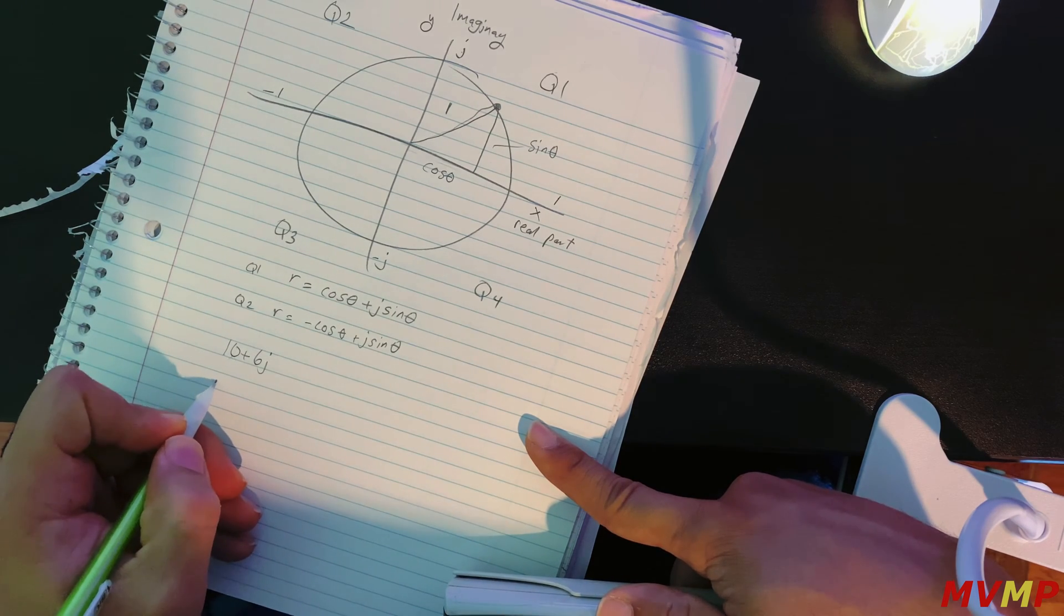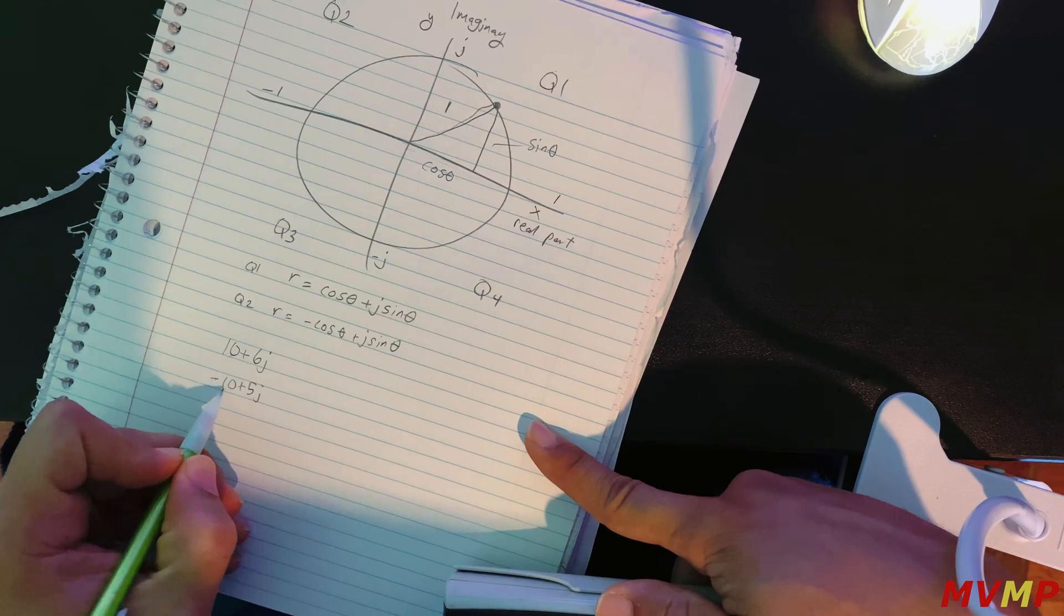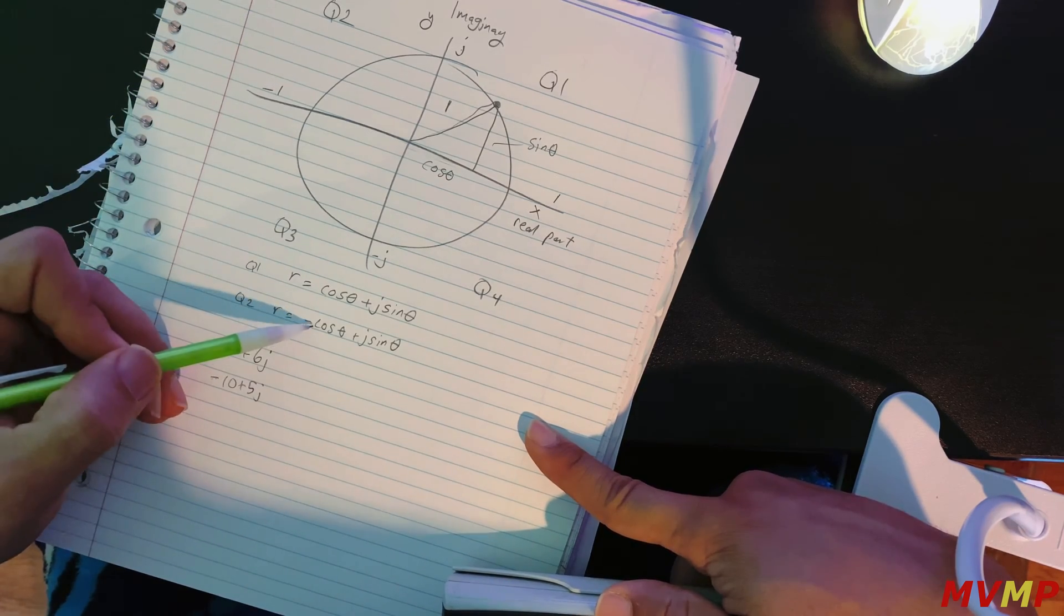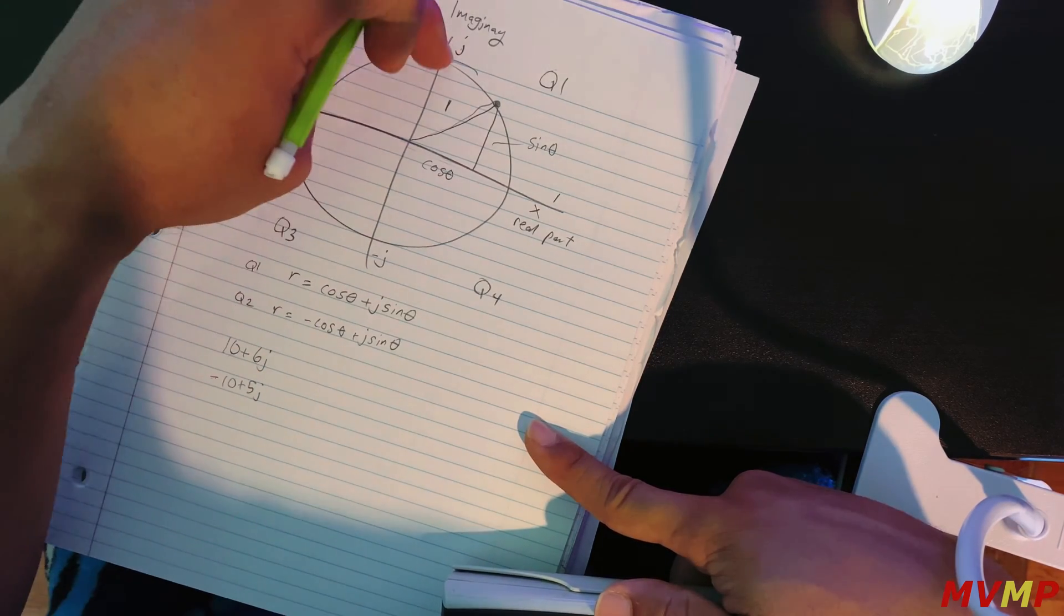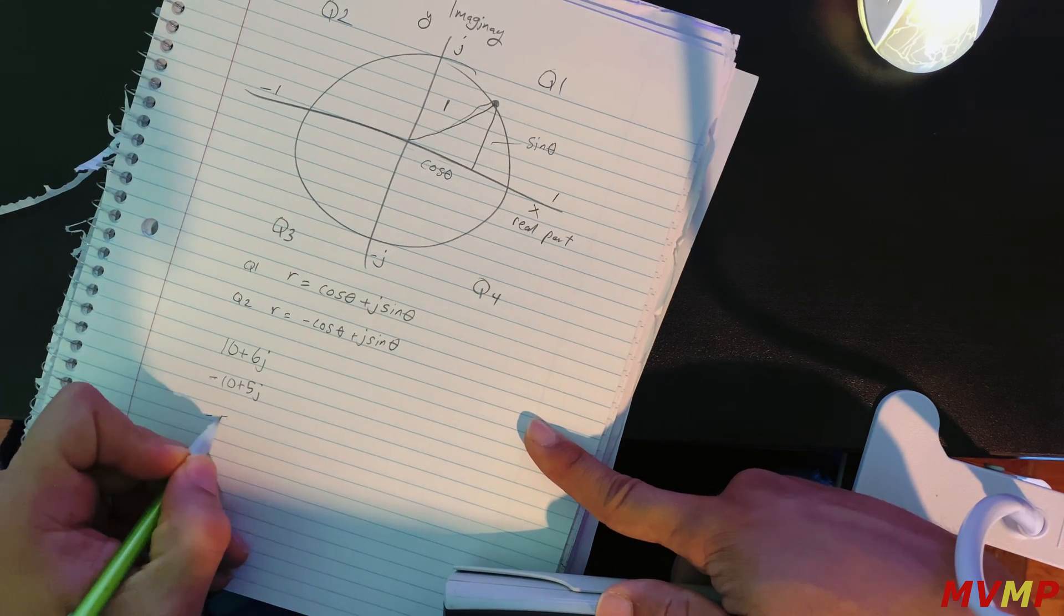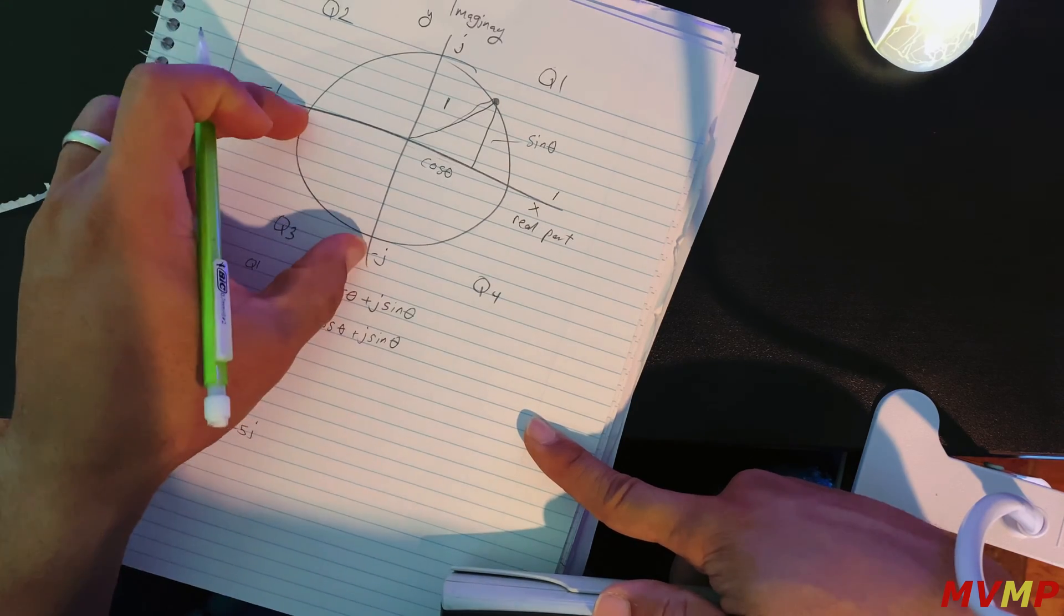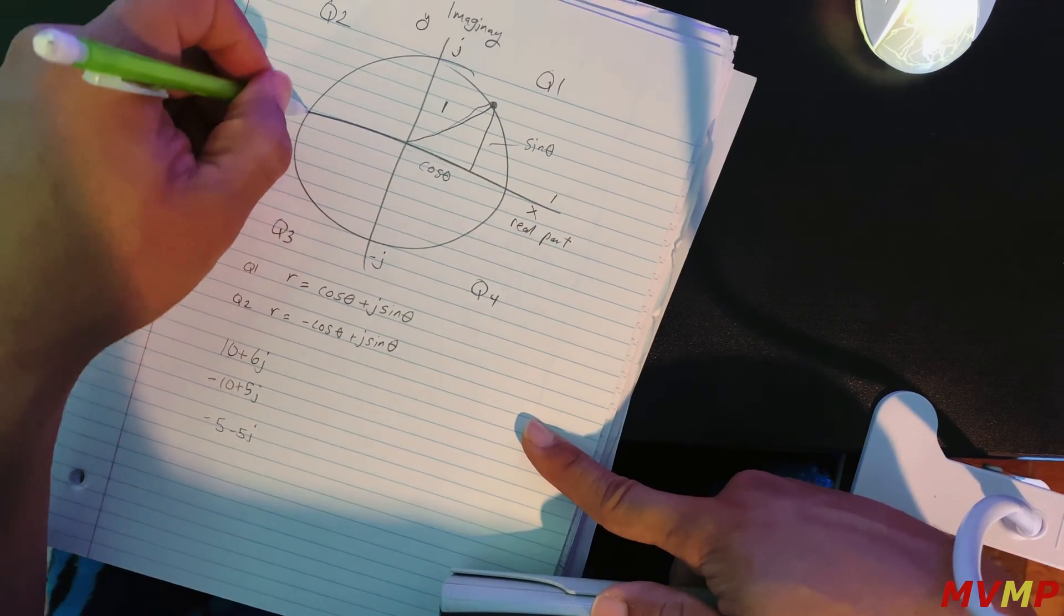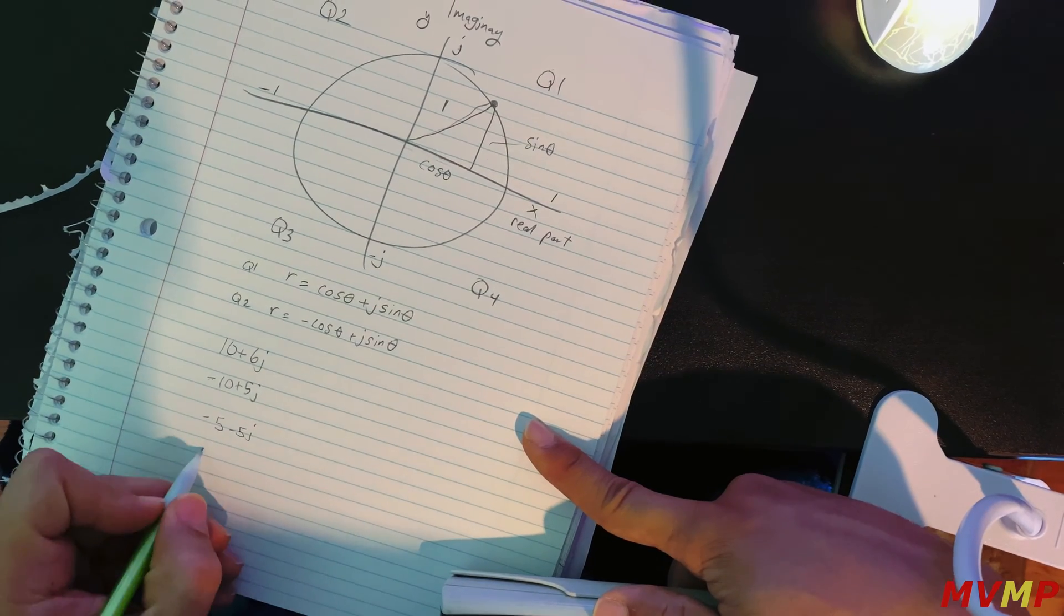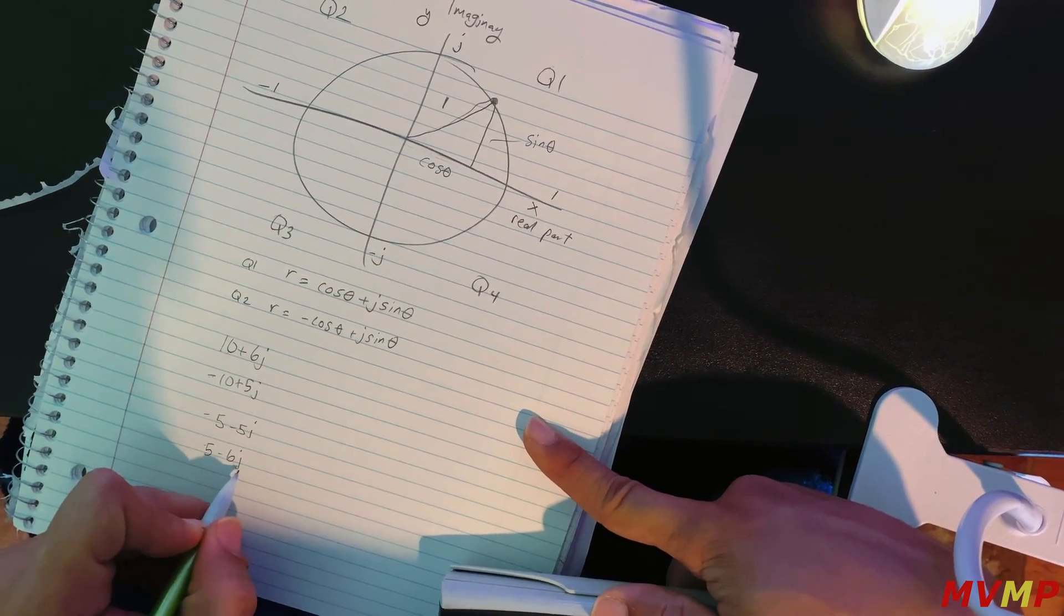If you were given negative 10 plus 5J, you'll compare it and you'll see that it will be between 90 degrees and 180. And 5 minus 5J, you know this will be in quadrant three between 180 to 270, and so on. So 5 minus 6J this will be in quadrant four.